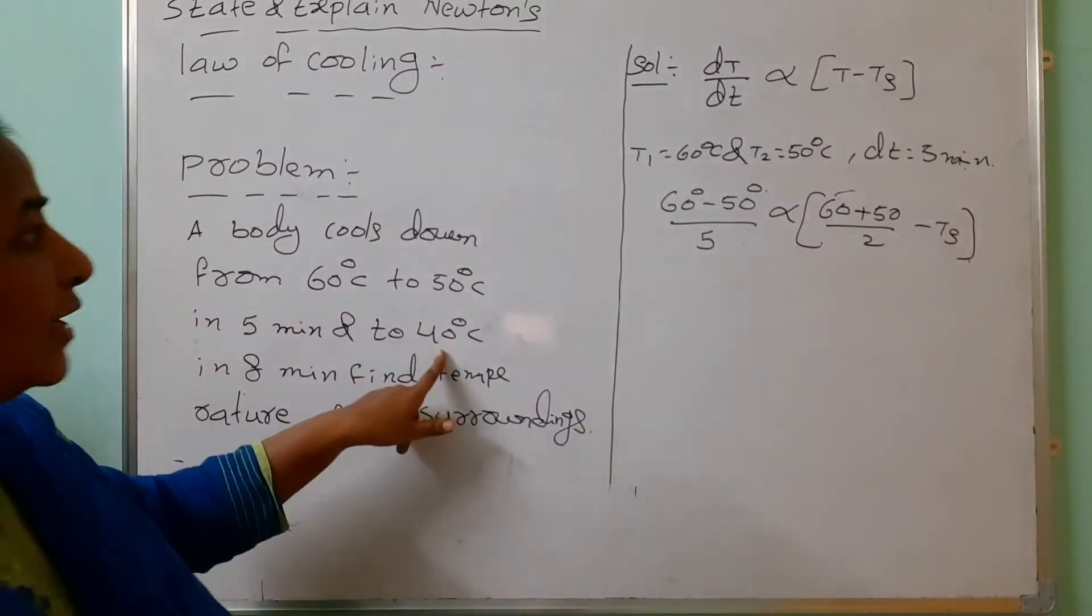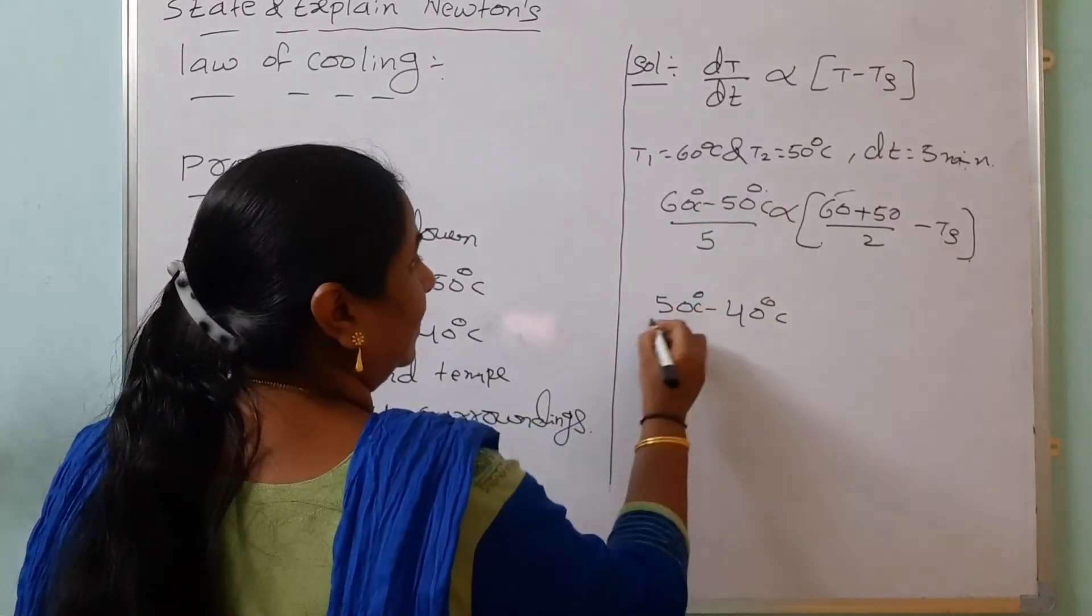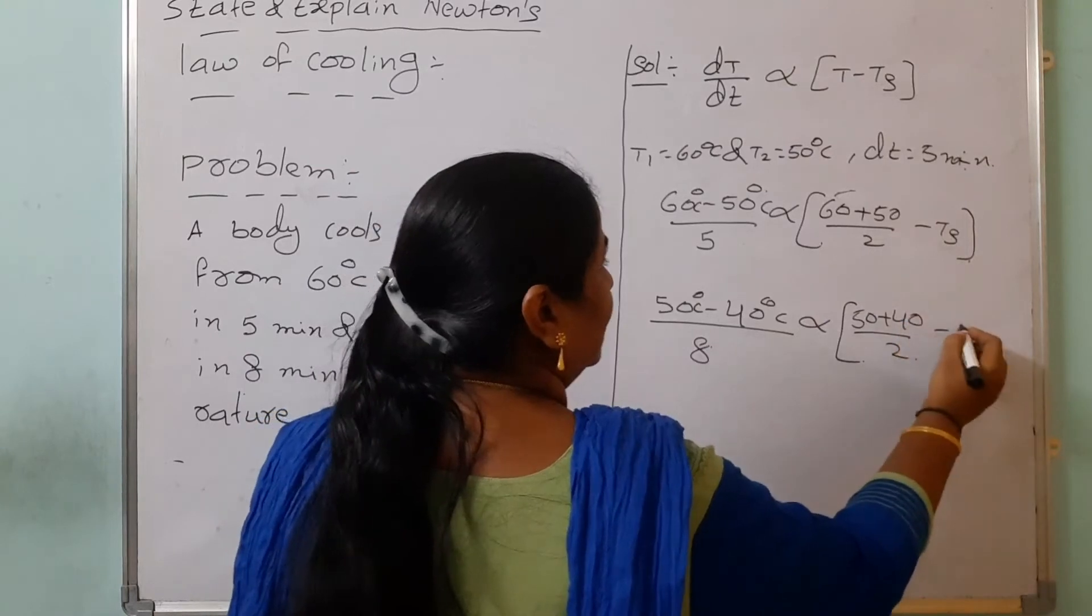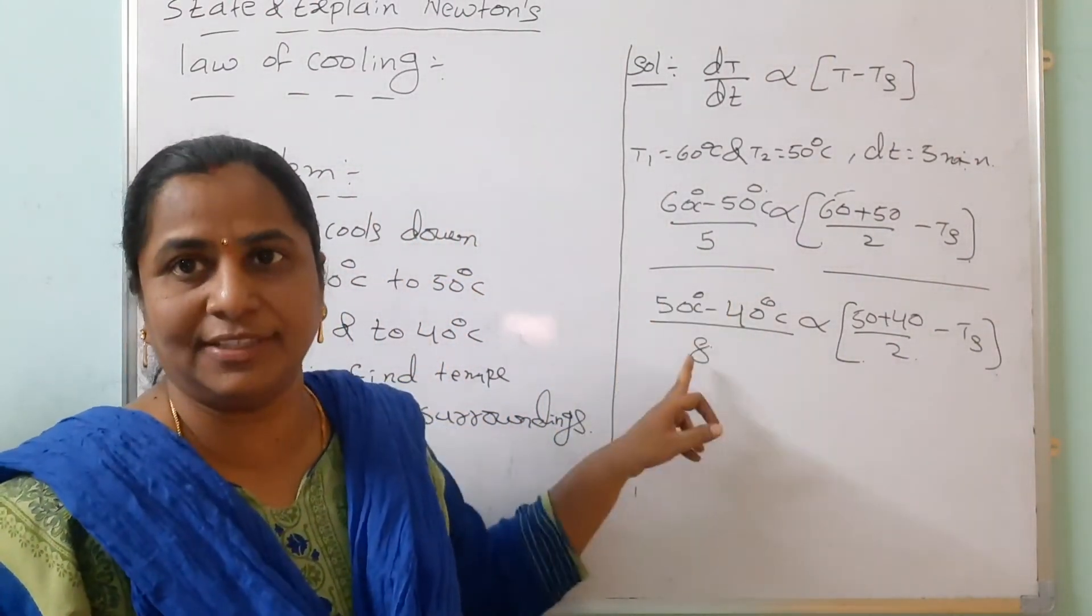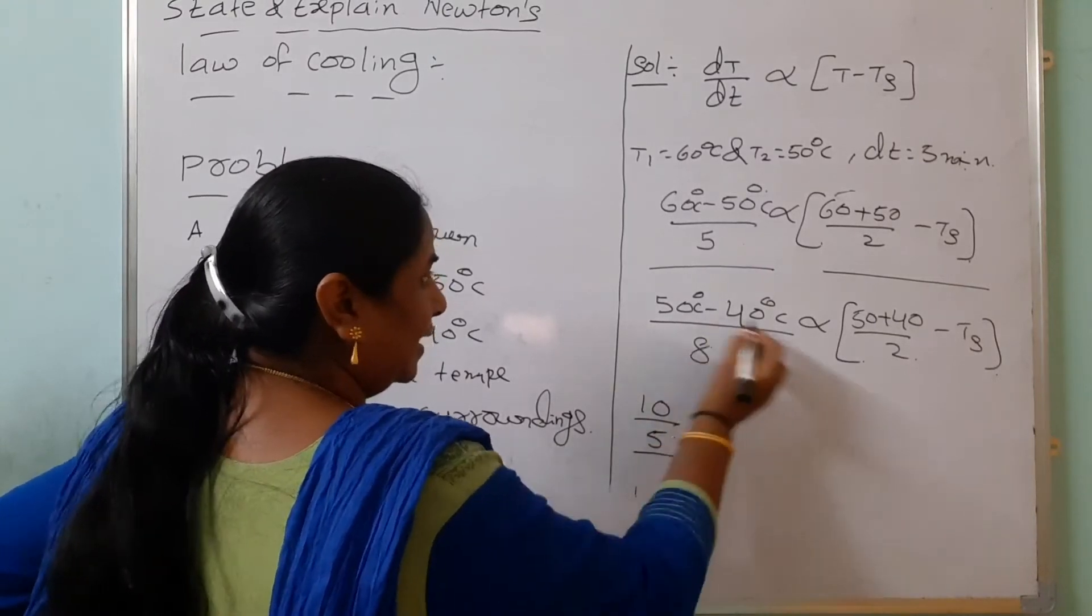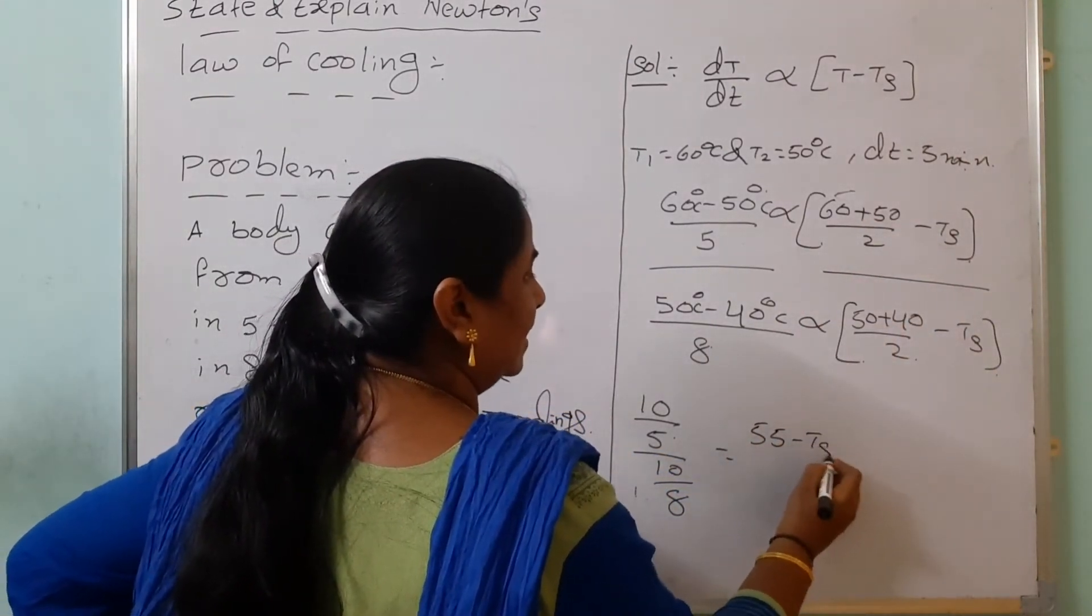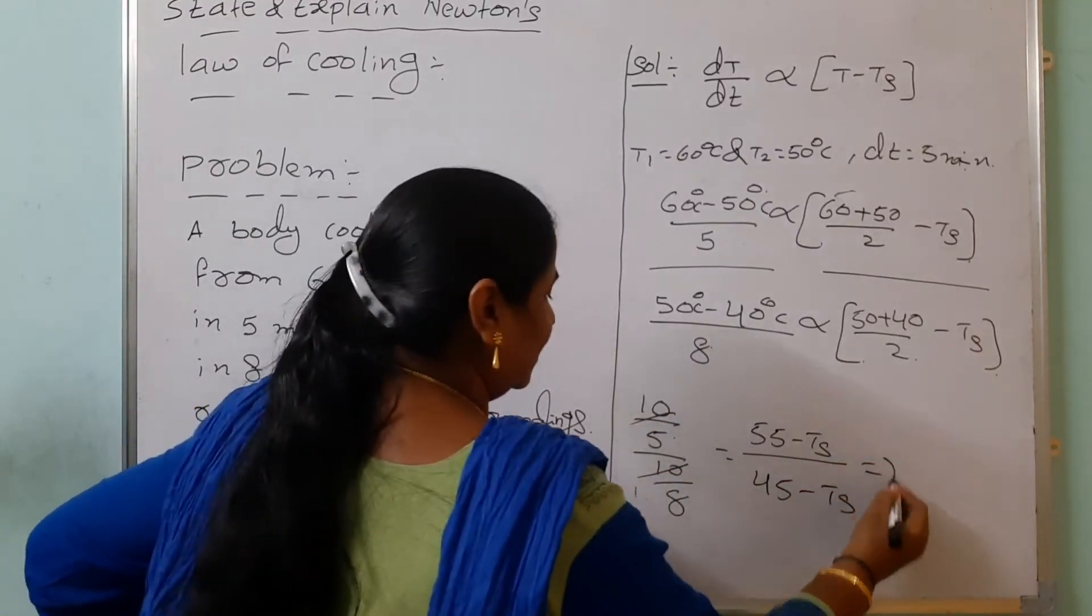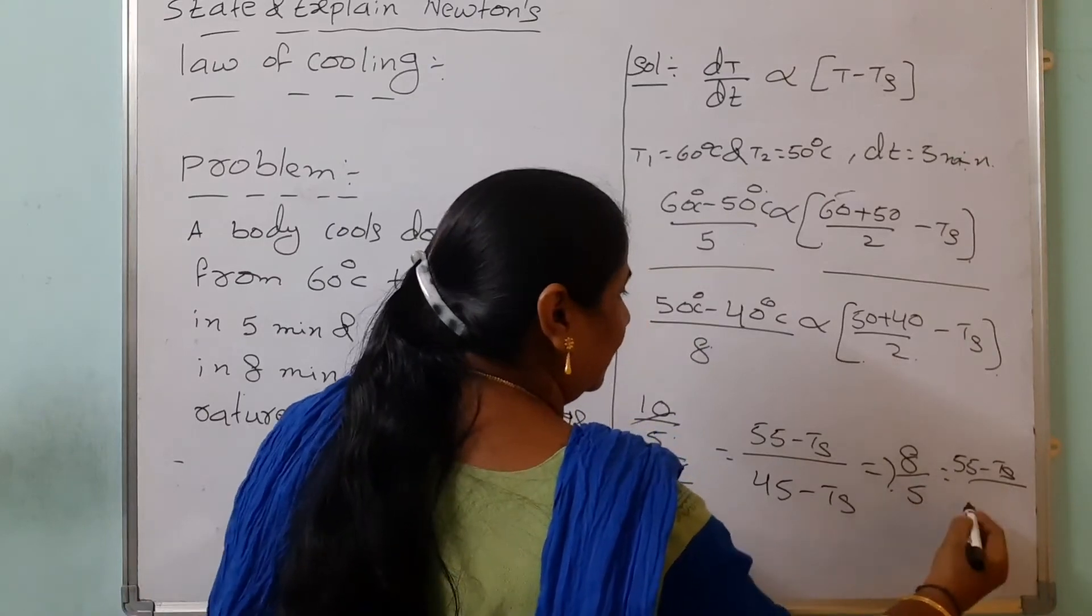Then second case, it is coming to 40 degrees centigrade. So we are taking 50 degrees centigrade minus 40 degrees centigrade divided by 8 minutes, is proportional to here average is how much? 50 plus 40 by 2 minus temperature of the surroundings. When we are taking the ratio of this one, same method we applied from 60 to 50 then 50 to 40. Here 60 minus 50 is 10 divided by 5 and here also 10 divided by 8 equals to this is 110 by 2, so 55 minus TS divided by this is 45 minus TS. Here 10, 10 cancelled. When it will reverse, what you are getting? 8 by 5 equals to 55 minus TS divided by 45 minus TS.